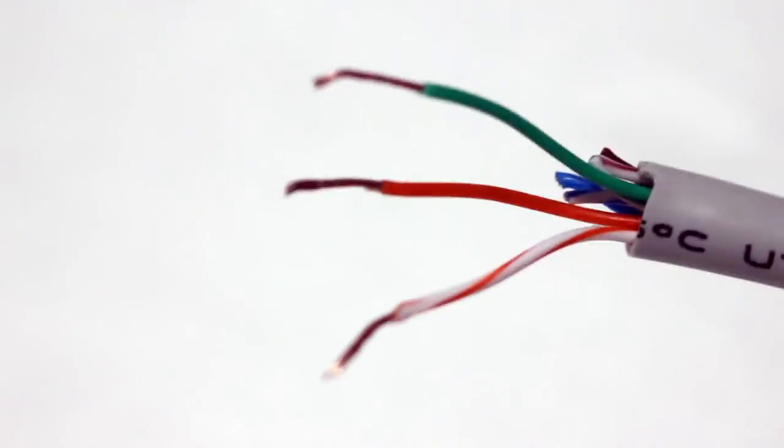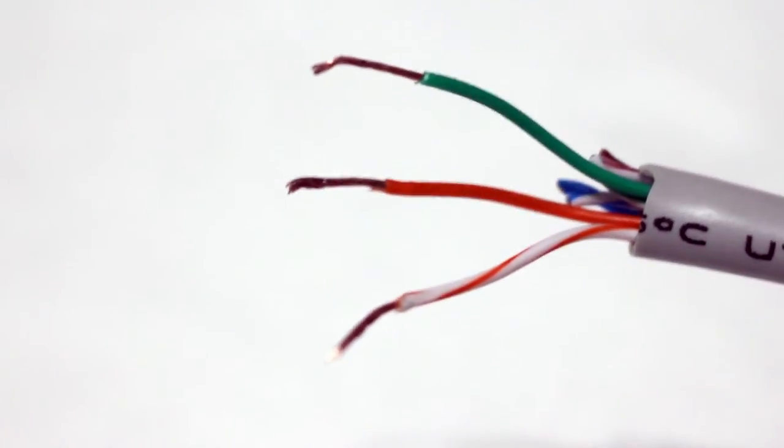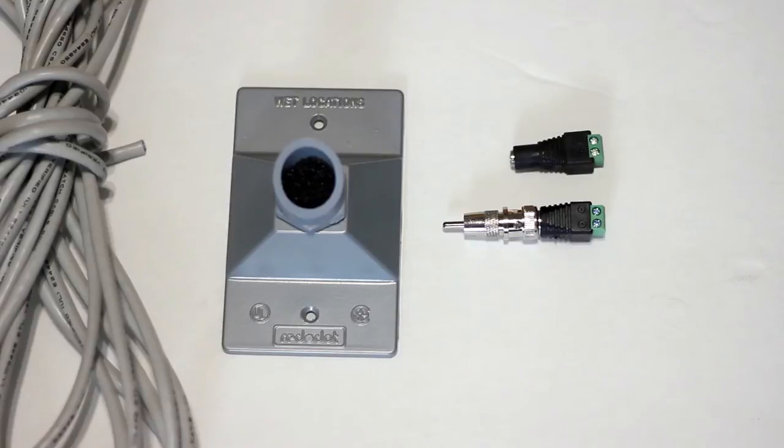Here you can see I've cut back the outside insulation on one end of this Cat5 cable, and then I've selected three wires out of the eight that I want to use, and then the other ones I just cut short to keep them out of the way.